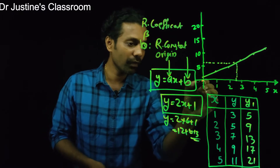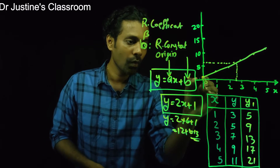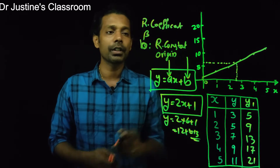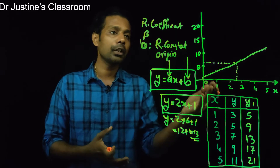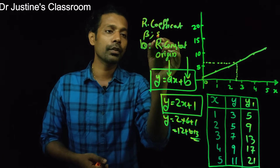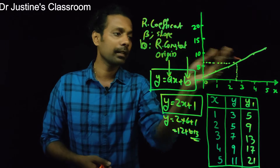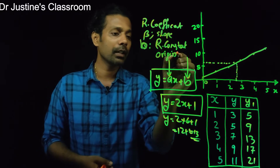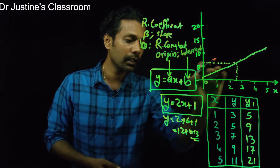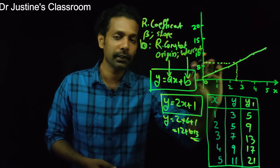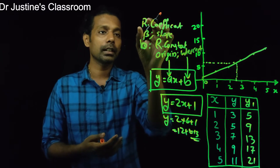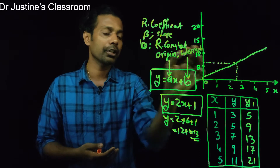The origin or constant B tells us what would be the score of Y when X is 0 — that is, from where the line starts. Statistically, other terms used are: the regression coefficient A is called the slope, and the regression constant B is called the intercept, meaning the point where the line intercepts the Y-axis.